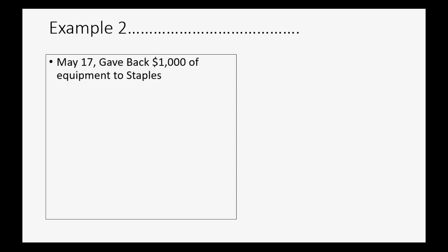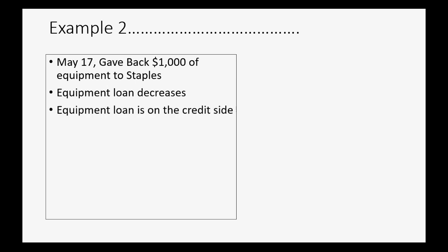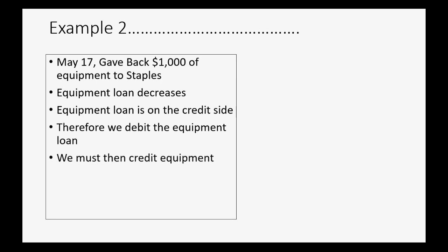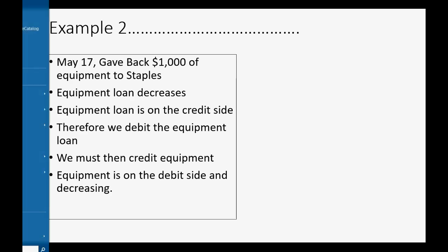To really bring home the point, let's do a second example. Let's imagine on May 17th, we gave back $1,000 of equipment to Staples. That means the equipment loan decreases and equipment is on the credit side. Therefore, we will debit the equipment loan and must then credit the equipment itself. Equipment is on the debit side and it is also decreasing.